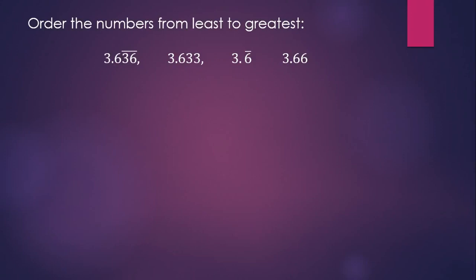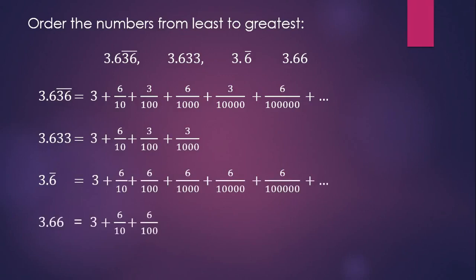Order these numbers from least to greatest. So think about the place value of the numbers, and when you have a repeating decimal, you have fractions that continue forever. So if we take each of these numbers and we consider the value of the digits, we can start to compare using the numbers that have the same place value. So all four numbers have a 3 in the ones place, and all of them have 6 tenths. But when we start to compare the hundredths, we can see that the first two numbers have fewer hundredths than the last two numbers. So they would have to be the first two numbers. Now to figure out which one of those numbers is the very smallest, we have to go to the thousandths place, and we can see that the second number has fewer thousandths than the first number.